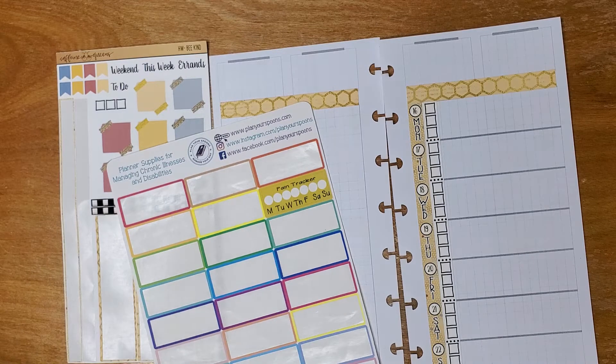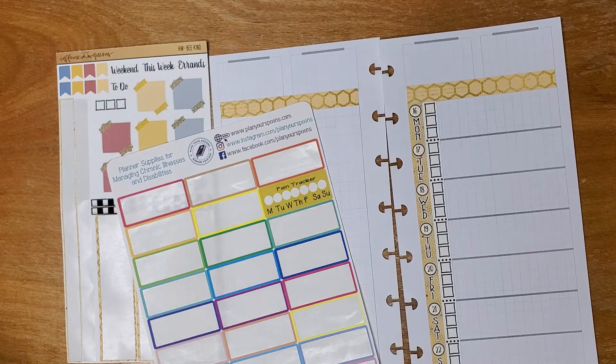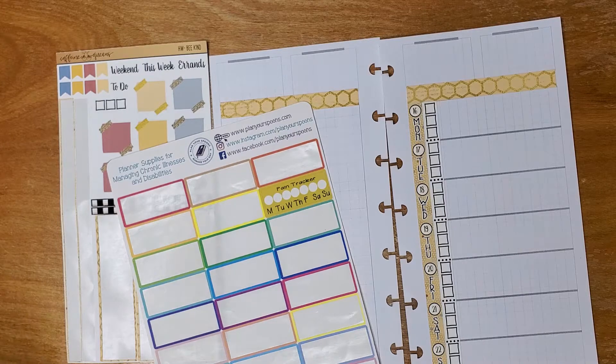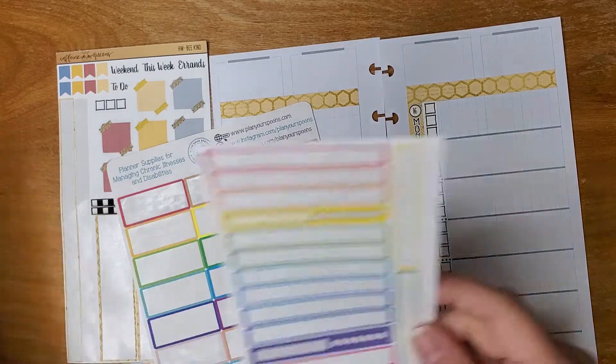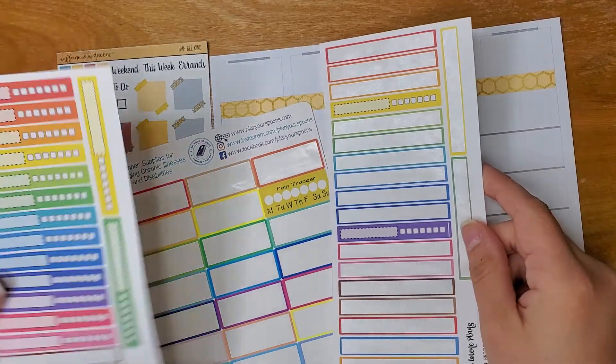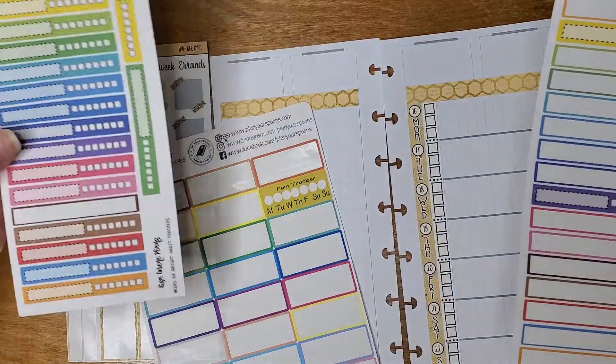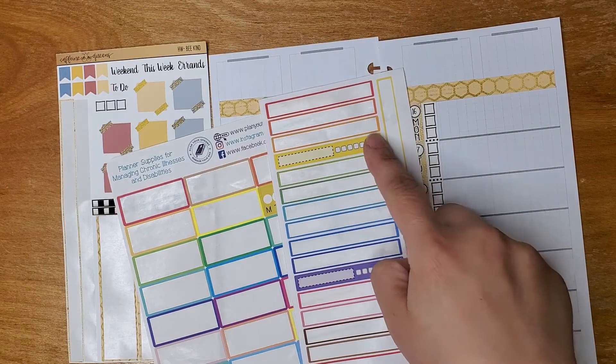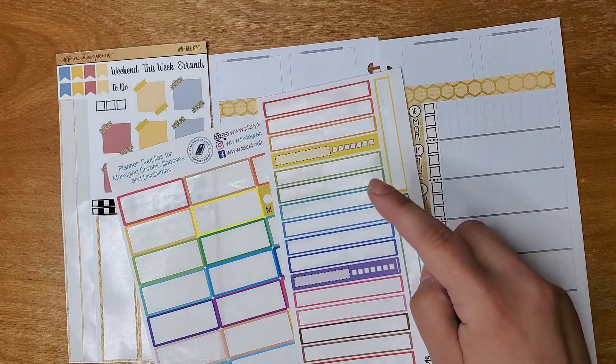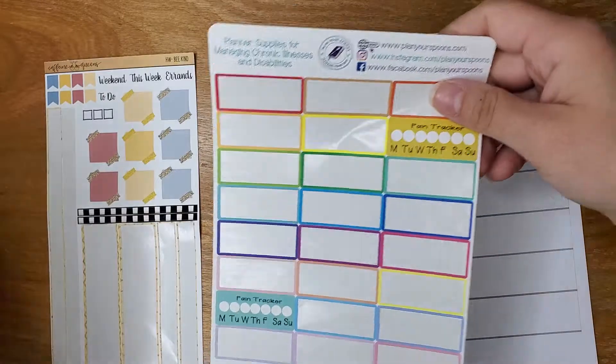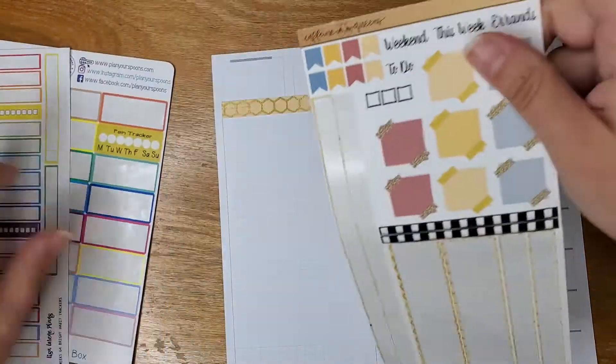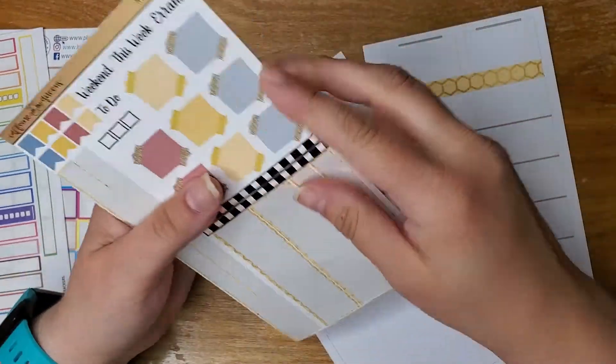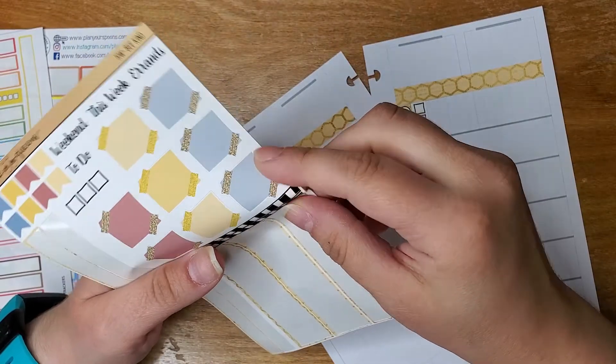Oh, I just realized this doesn't have habit trackers on it. That's okay. I have some, and I didn't pull my pain tracker one out. Whoops. I guess I'm a mess today. That one will work for that. And then, I have, do we want to go yellow again or do we want to use something else?